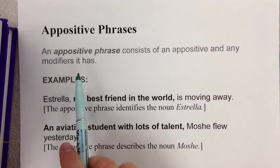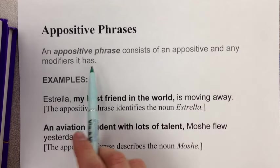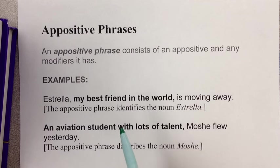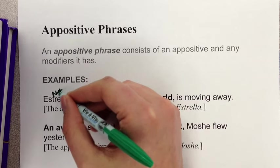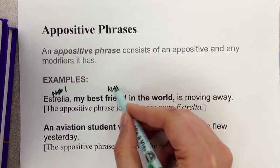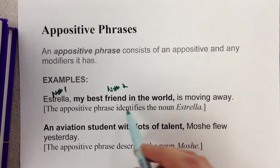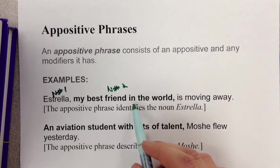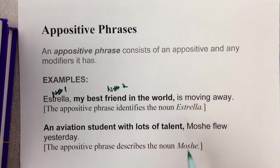An appositive phrase contains not just the appositive but also any modifiers — adjectives describing the second noun, or prepositional phrases that describe the appositive. For example: 'Estrella, my best friend in the world, is moving away.' Here 'my best friend' is the appositive, and 'in the world' is a prepositional phrase that describes 'my best friend.' Together, the whole thing is one appositive phrase.